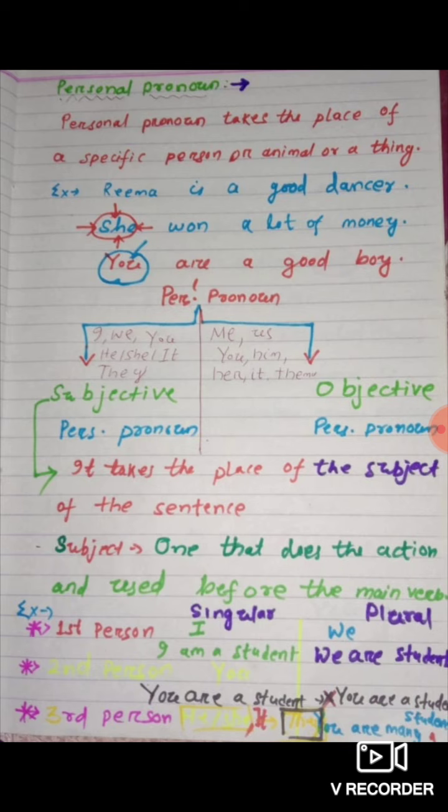I, we, you, he, she, it, they are the subjective personal pronouns, and they are used as the subject in a sentence. As you know, the subject is that which does the action and uses the verb — it is also called the doer. The subject needs to change according to gender.